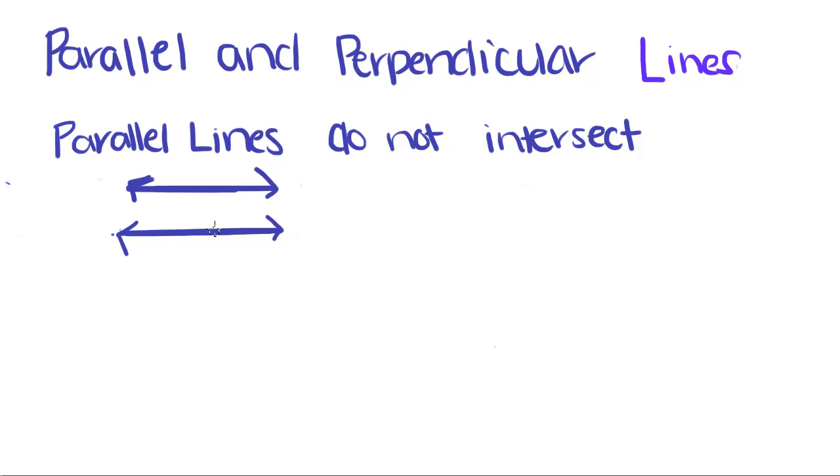If you look, these two lines have an equal distance between them, and they will never intersect. We denote parallel lines with these little arrows.